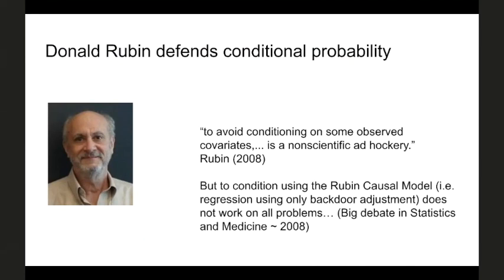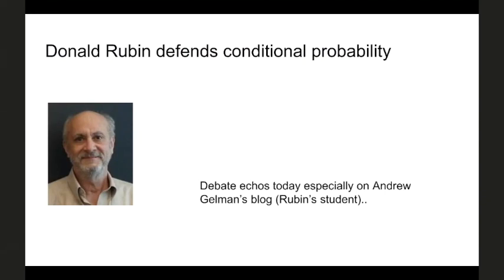As we saw before, if we stick only to the Rubin causal model or adjustment for observables, that doesn't work on all problems — that's actually one specific identifiable causal graph. This has led to a huge debate, particularly between Andrew Gelman and others, about what is really required for causal inference — do we need things beyond basic probability? There's been a resurgence of that debate recently when Pearl published his new book, The Book of Why, which is what really got us interested in doing this talk.